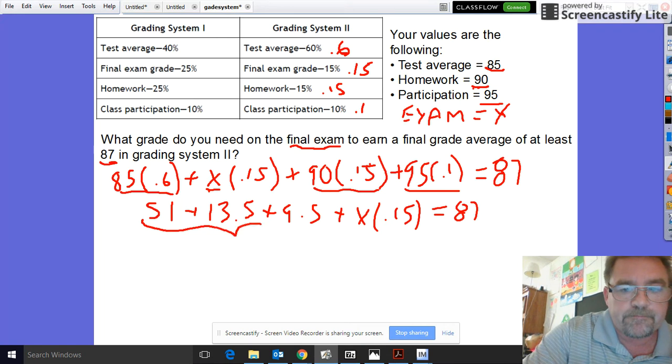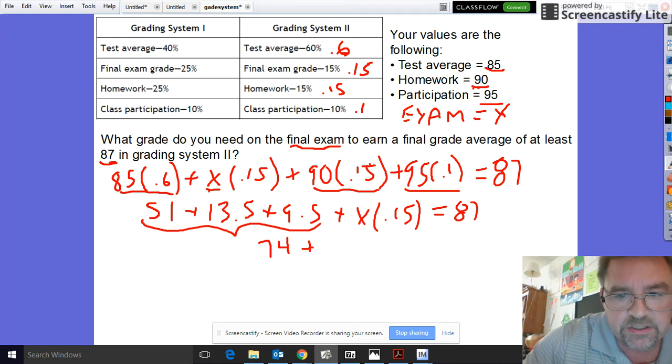That's still all equals 87. All right, when you add all this up you get 74. Now this is starting to look more like an equation you're used to solving, a simple two-step equation.